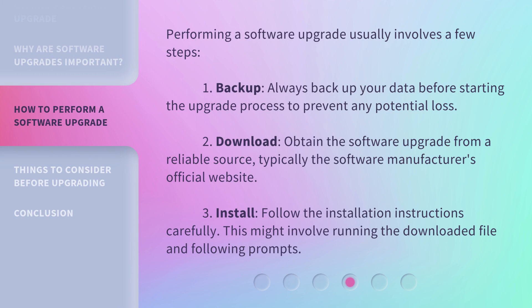Performing a software upgrade usually involves a few steps. 1. Backup: always back up your data before starting the upgrade process to prevent any potential loss. 2. Download: obtain the software upgrade from a reliable source, typically the software manufacturer's official website.